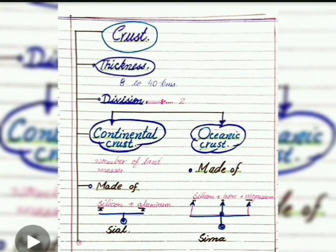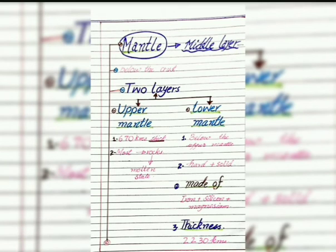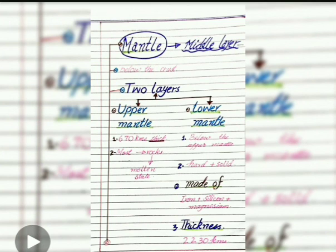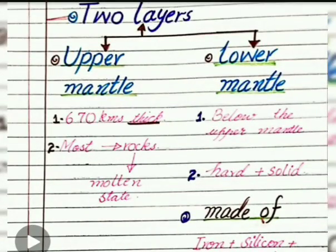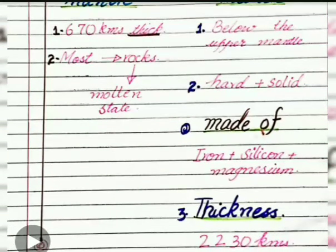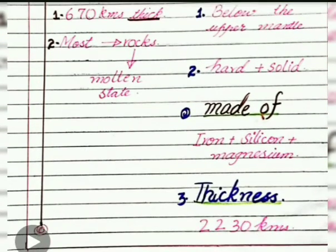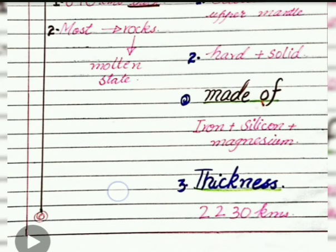The mantle is the middle layer of the earth. It has two layers: upper mantle and lower mantle. Upper mantle thickness is 670 kilometers, and in this layer most rocks are in molten state. Lower mantle is below the upper mantle; it is in solid and hard form, made of iron, silicon, and magnesium. Its thickness is 2,230 kilometers.